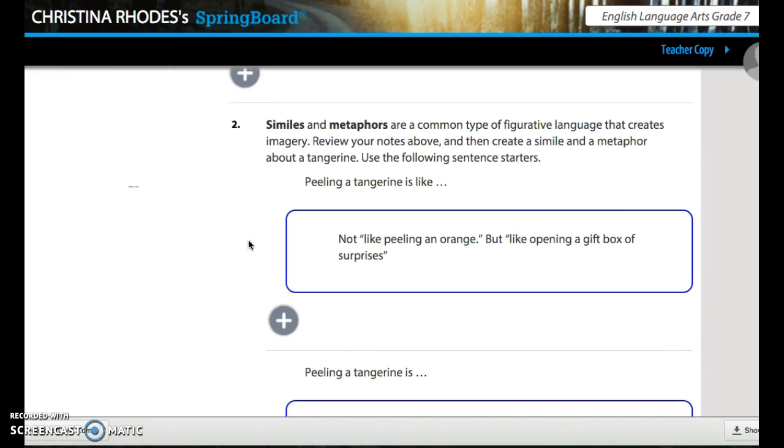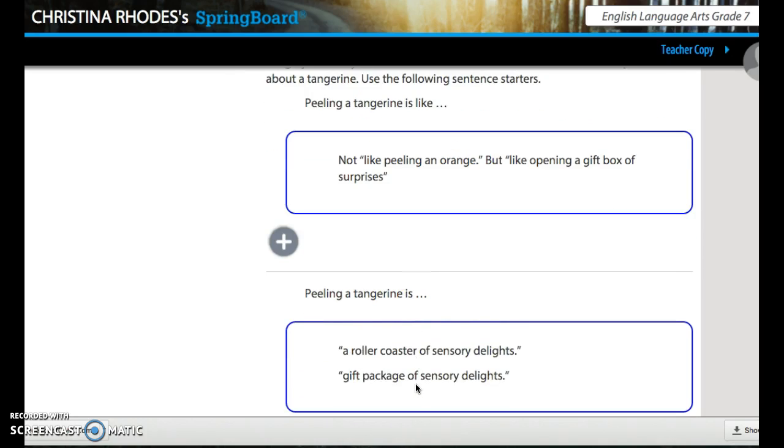Review your notes above and then create a simile and a metaphor about a tangerine. Use the following sentence starters. Peeling a tangerine is like and then you're going to finish it. So this one says not like peeling an orange but like opening a gift box of surprises. So you are going to come up with something that it is like. So simile you're using like or as. Peeling a tangerine is like. Then a metaphor down here. Peeling a tangerine is. The example they have given is a roller coaster of sensory delights. Or peeling a tangerine is a gift package of sensory delights. This is both an example of metaphor. So we have simile and metaphor. Please write down one simile and one metaphor. I'm going to pause the video.